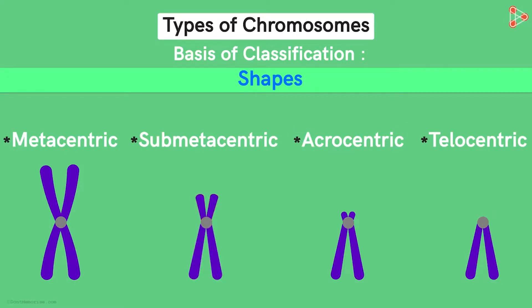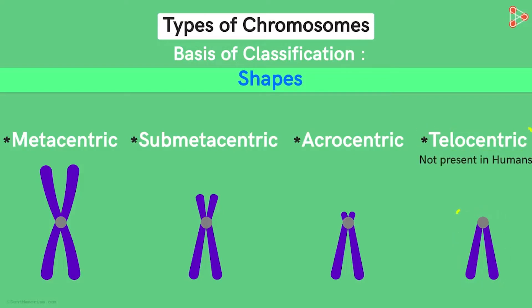Acrocentric chromosomes: the centromere lies near one end and has a small arm beyond the centromere, leading to one very long and one very short section. Telocentric chromosomes: they have the centromere at the very end of the chromosome. Human karyotypes do not possess telocentric chromosomes, but they are found in other species such as mice.